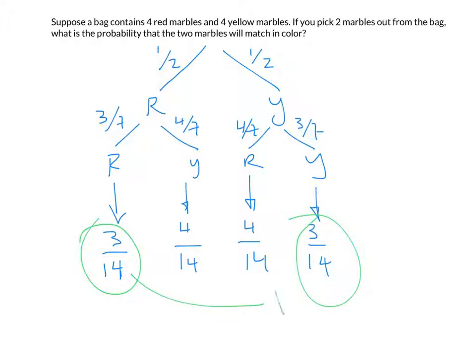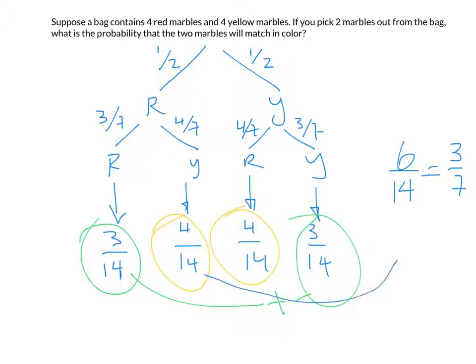Once you've drawn a color, it's more likely you'll draw the other color on the second draw. Multiplying: the matching outcomes are three-fourteenths and three-fourteenths, adding up to six-fourteenths or three-sevenths. The non-matching outcomes are four-fourteenths and four-fourteenths, adding up to eight-fourteenths or four-sevenths. So it's more likely you'll get non-matching marbles than matching ones.